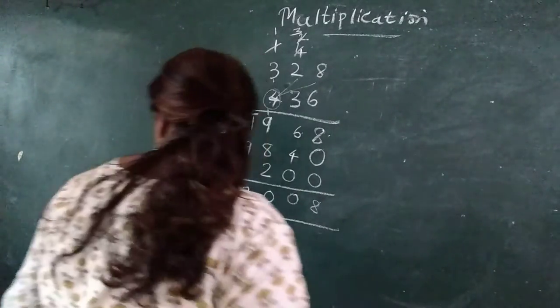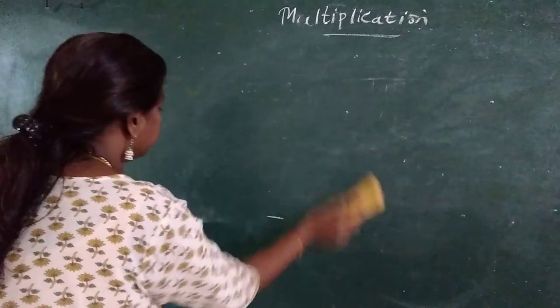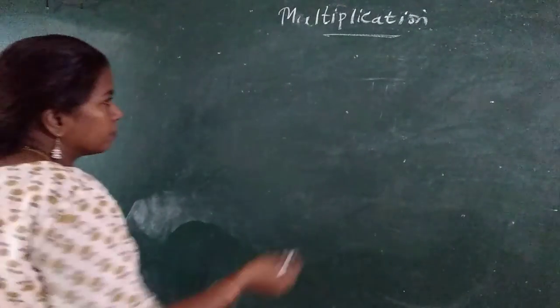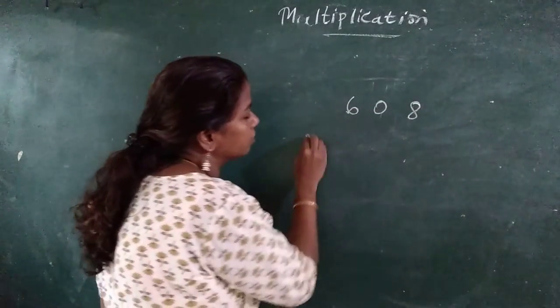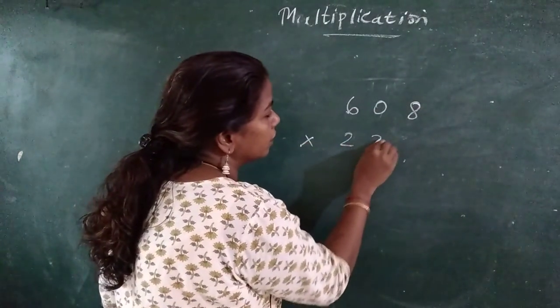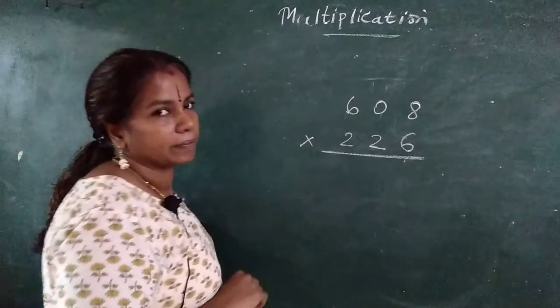We will do this. We will go for another sum. 608 multiplied by 226.